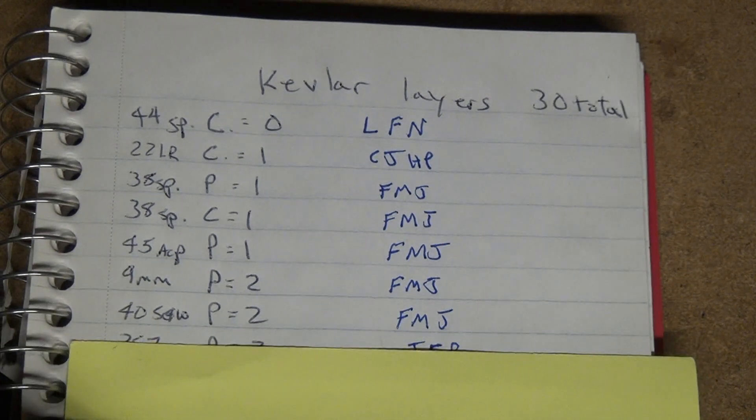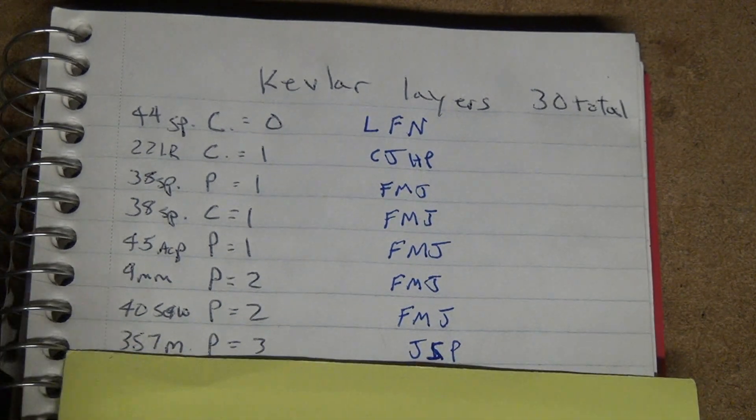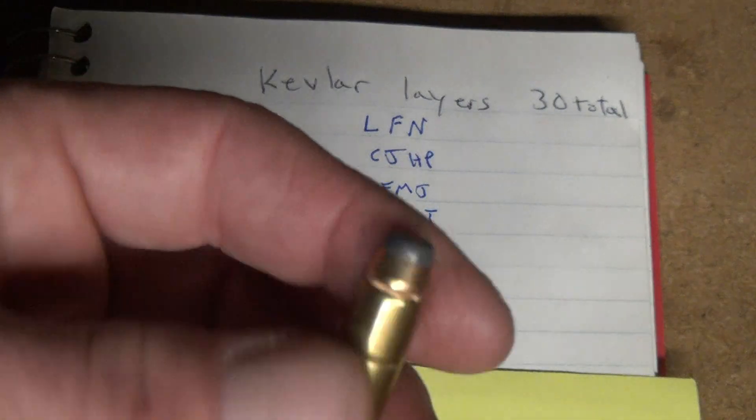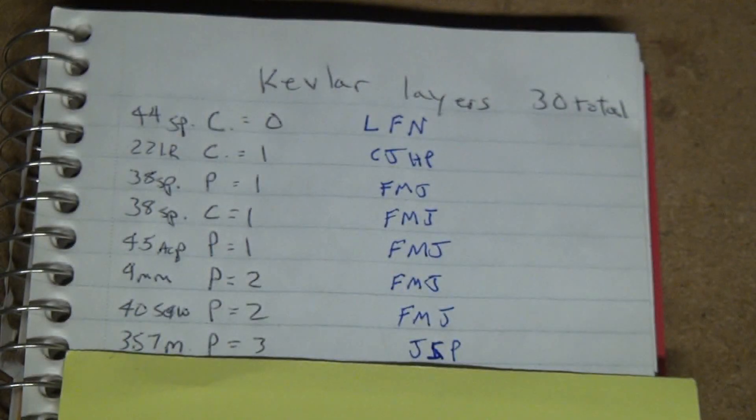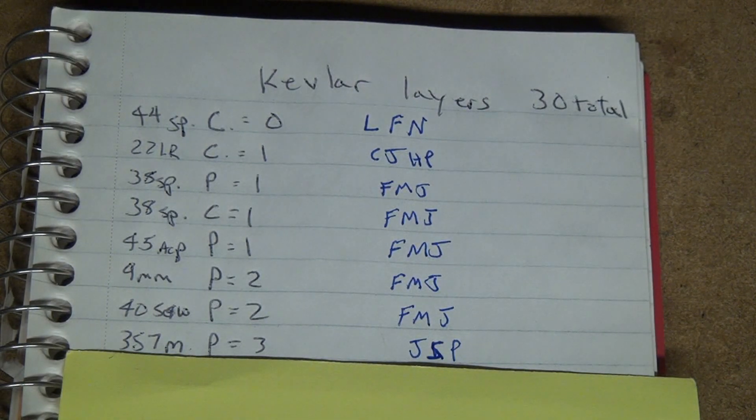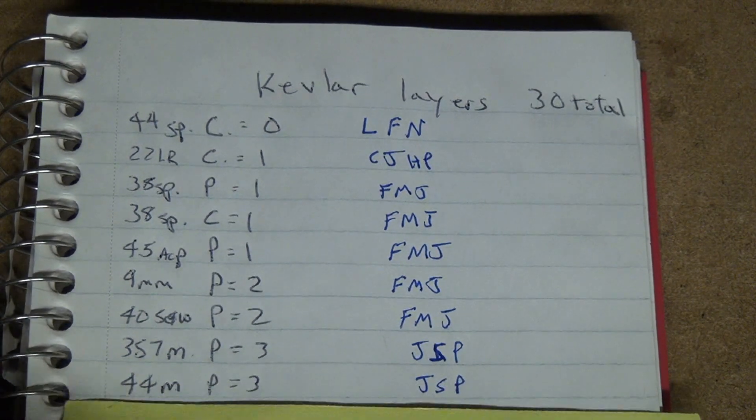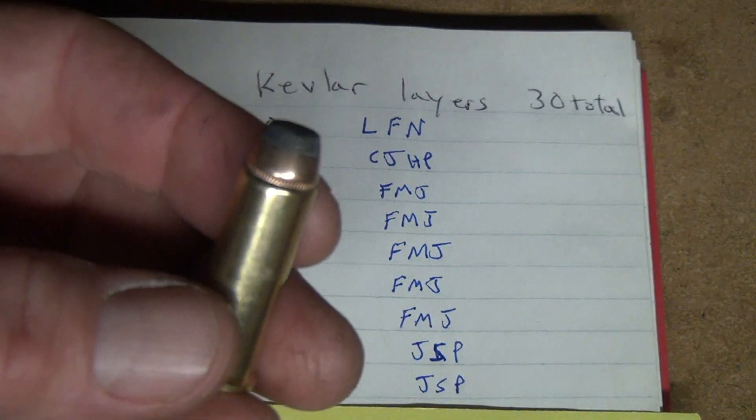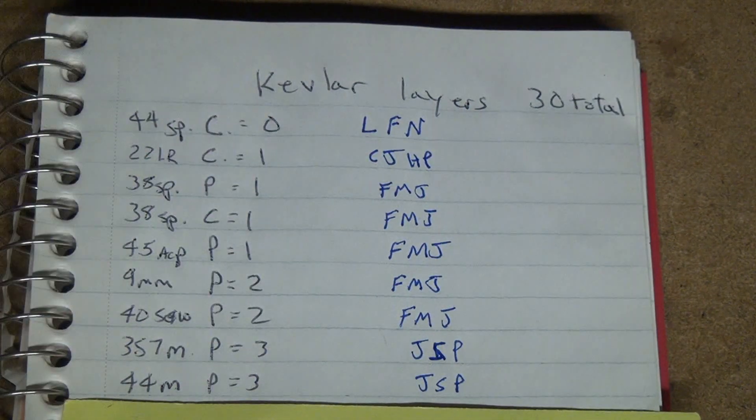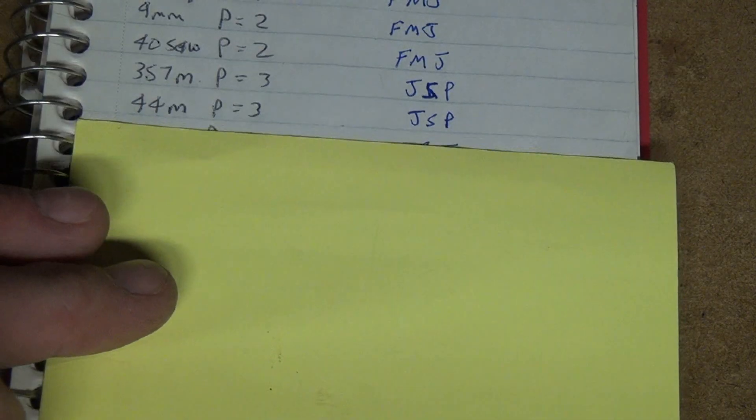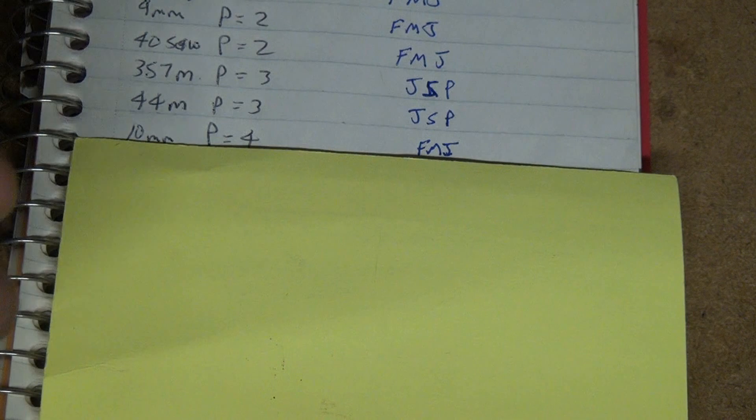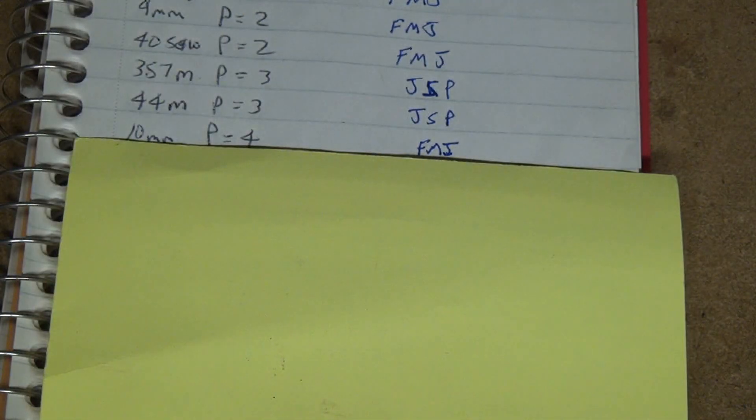After that was the .357 Magnum pistol. Went through three layers. Now, like I said, I could have used a better round than that, which I probably will go back to it. And also went through three layers was the .44 Mag pistol. That only went through three layers. The next one after the .44 Mag was actually the 10mm. The 10mm went through four layers of Kevlar.